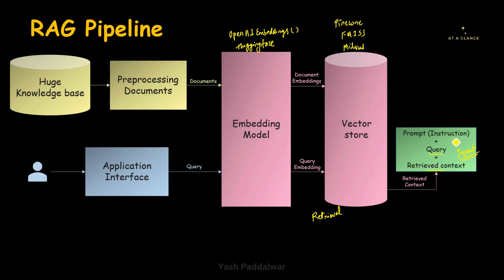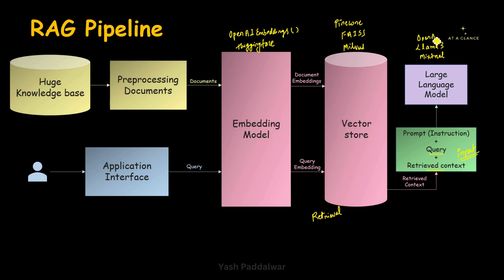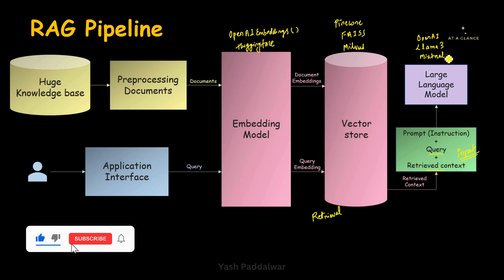This entire prompt will pass on to the large language model. When we talk about the large language model, we can use any large language model — it can be open source or paid. For example, LLaMA 3 — there are a lot of versions of it, and the latest one is LLaMA 3. You can also use Mixtral. We can use the OpenAI LLM model as well as multiple other open-source and paid models. You can use any one that suits your use case and generate the response.